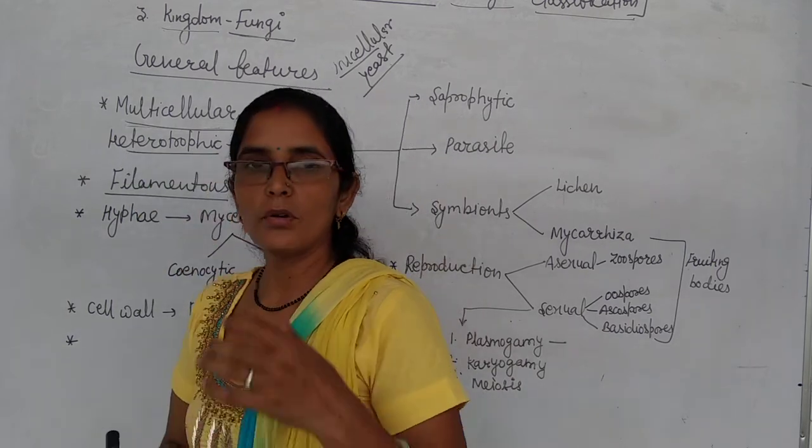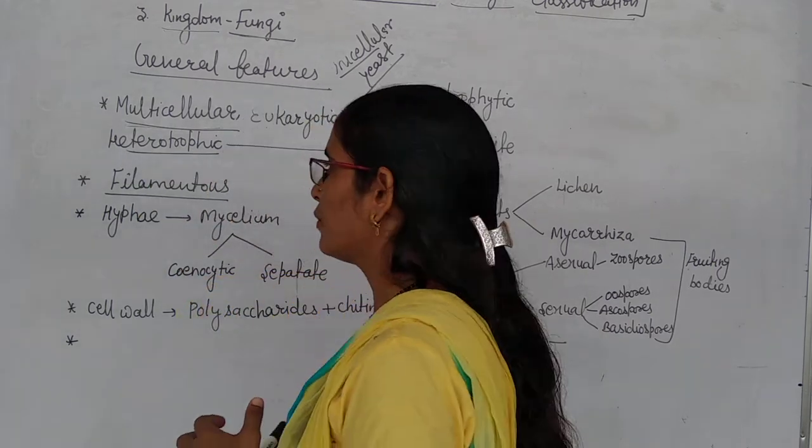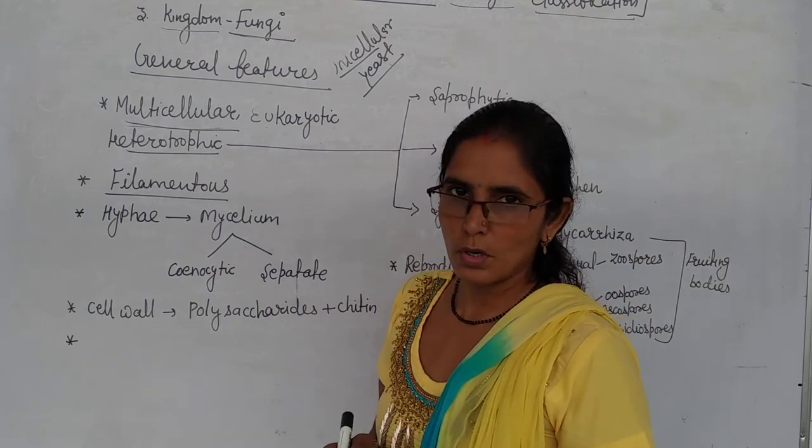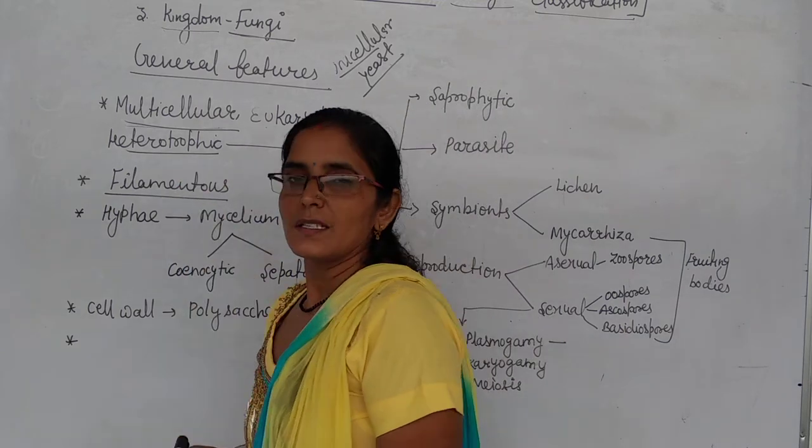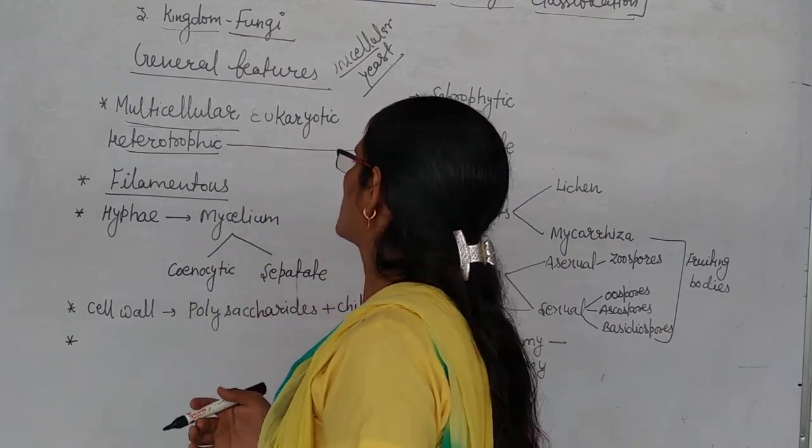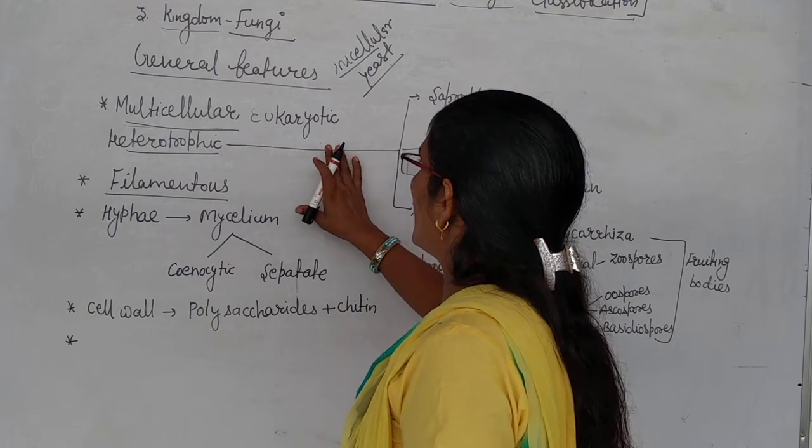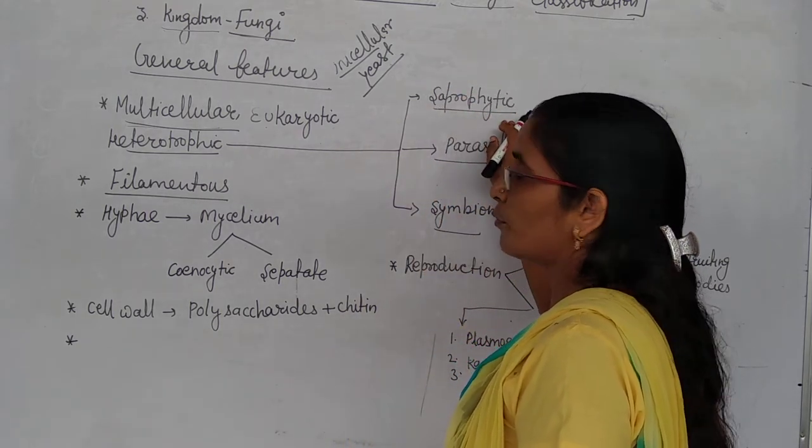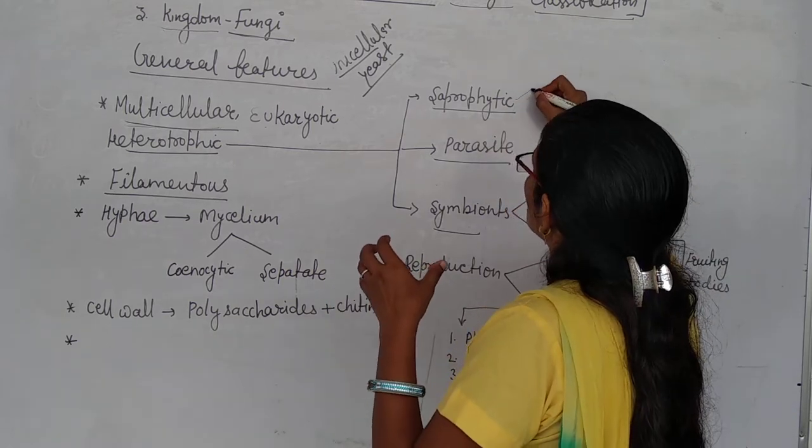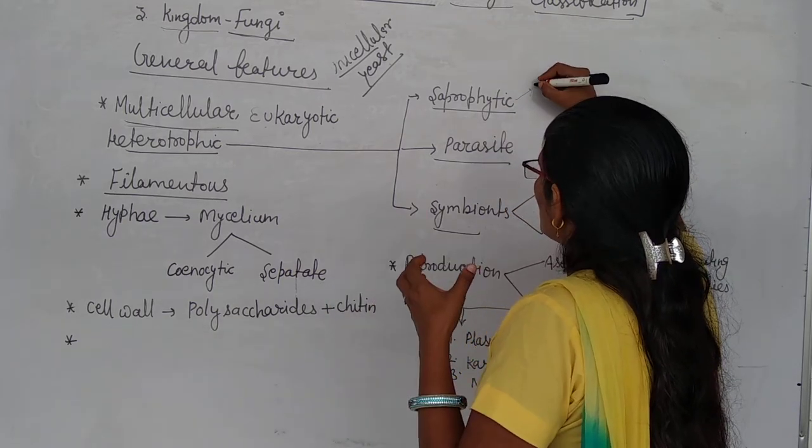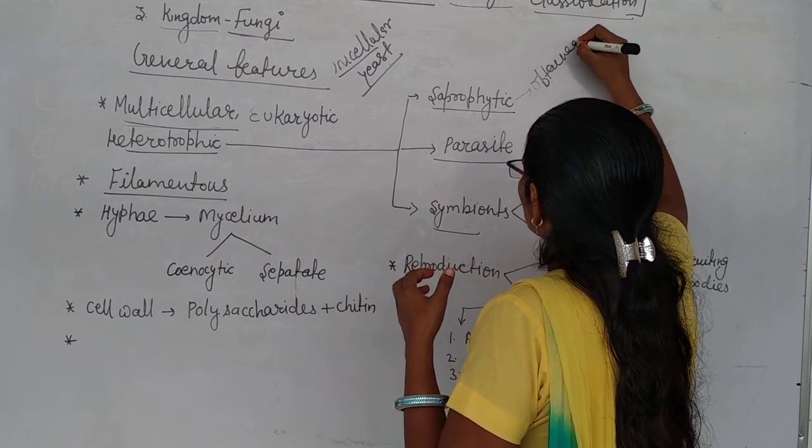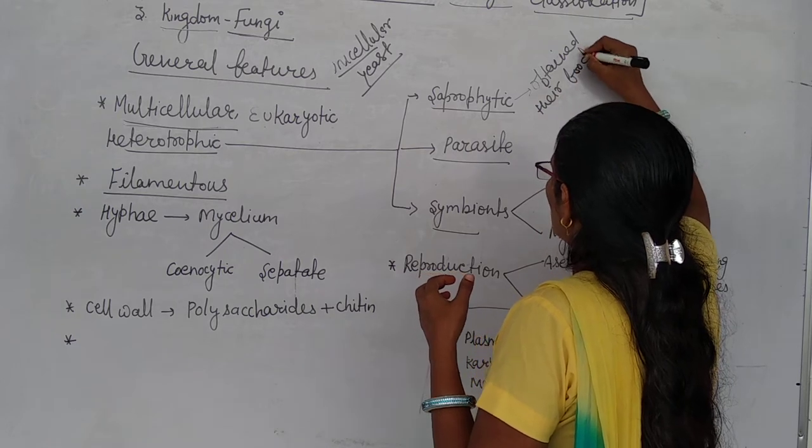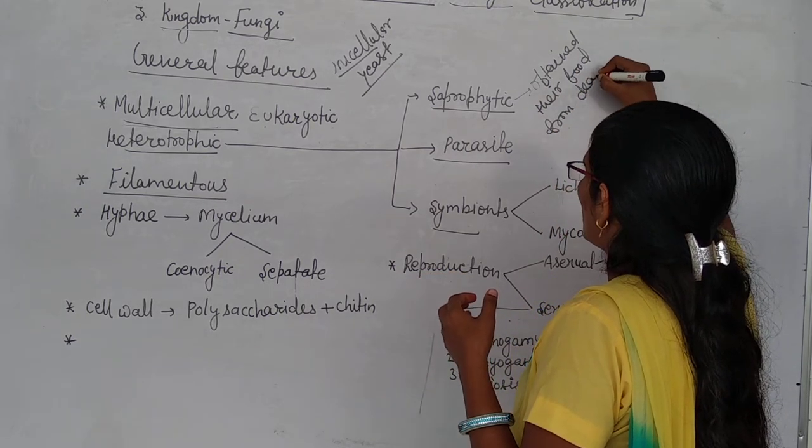Heterotrophic - how is their mode of nutrition? Before we discussed about Monera and Protista, some are autotrophs, some are heterotrophs. Here, fungi have heterotrophic mode of nutrition. What do I mean by heterotrophs? The organisms which obtain their food from dead and decaying matter.